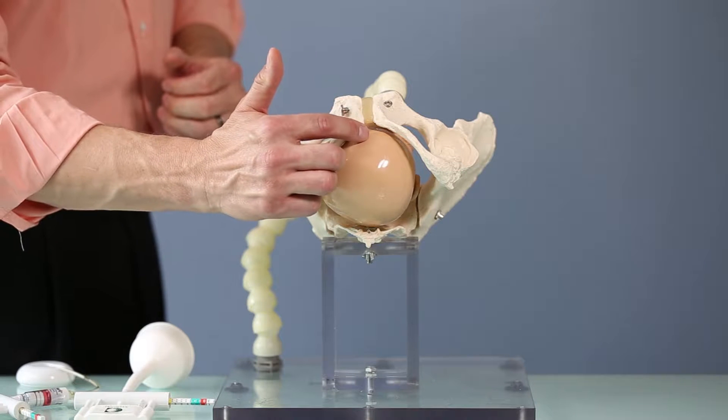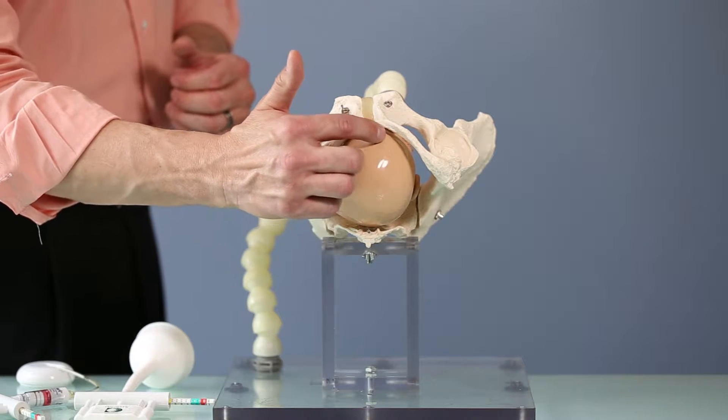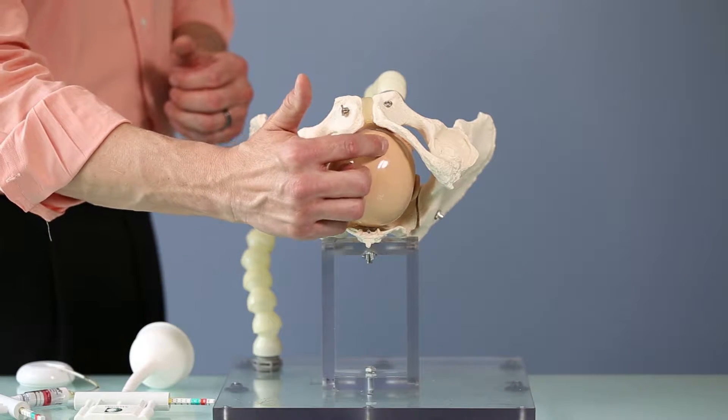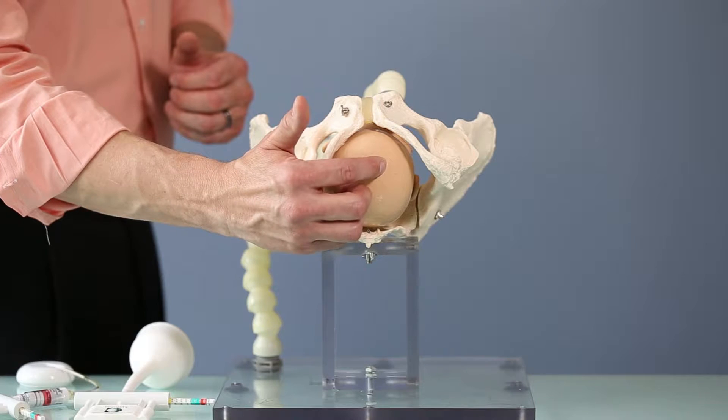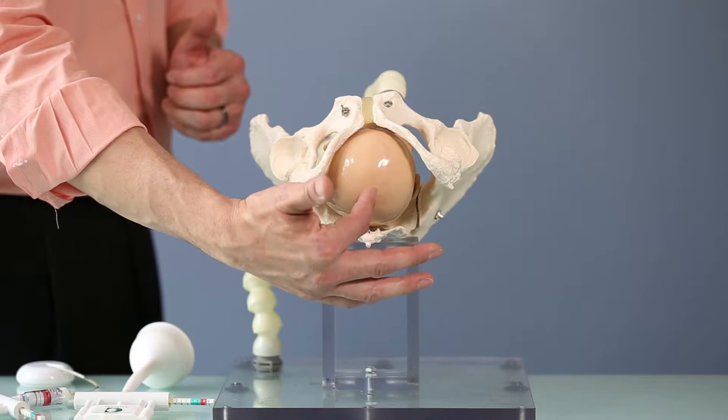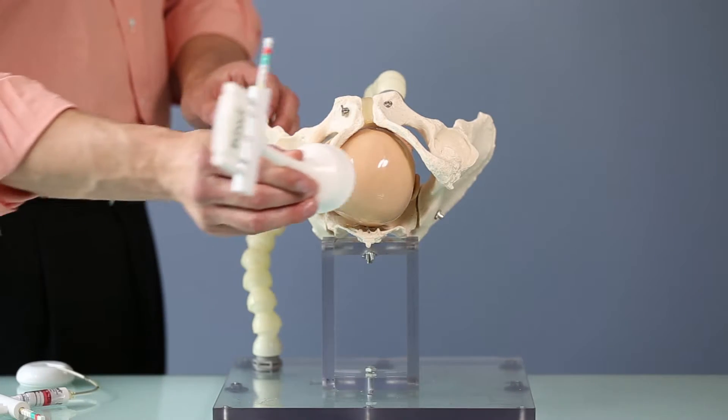but notice what it's done to the presenting part and what it's done to the flexion point. Presenting part now has become mainly the right parietal bone and the flexion point is actually moved down three centimeters along sagittal suture away from where we can get access by using a rigid stemmed cup.